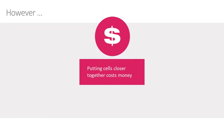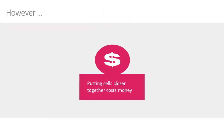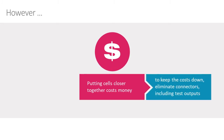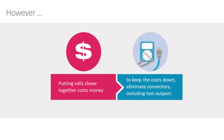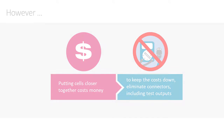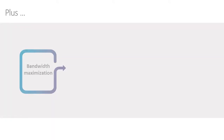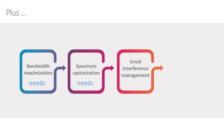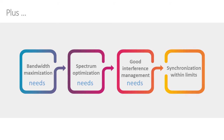However, putting these things closer together and making them more dense is expensive. We need more base stations, and to make more base stations we tend to make them smaller. In order to keep costs down, we do everything we can to get rid of connectors, including the 1PPS test output traditionally used on a larger base station. Plus, we're trying to maximize the bandwidth, which needs better optimization of the spectrum, which in turn needs good interference management, requiring us to synchronize within the limits defined in the standards.